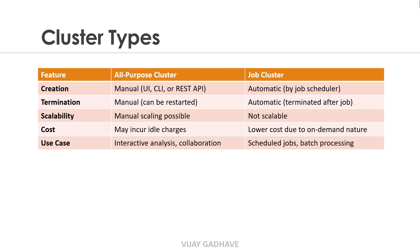The next feature is Use Case. The All-Purpose Cluster is used for interactive analysis and collaboration, such as data exploration and model development, where multiple users may access the cluster. Whereas the Job Cluster is best for scheduled jobs or batch processing, where predefined tasks like data pipelines are executed without user interaction.